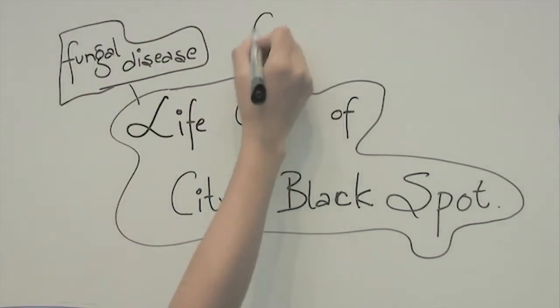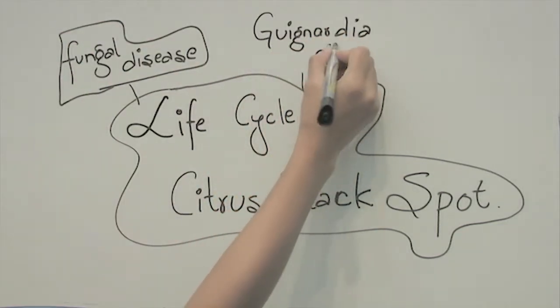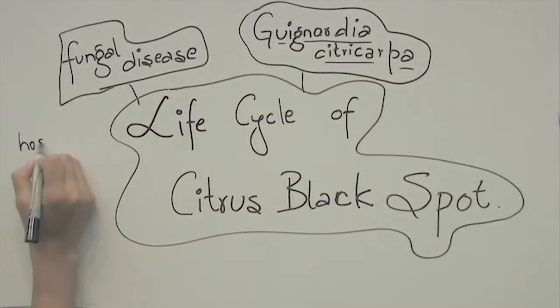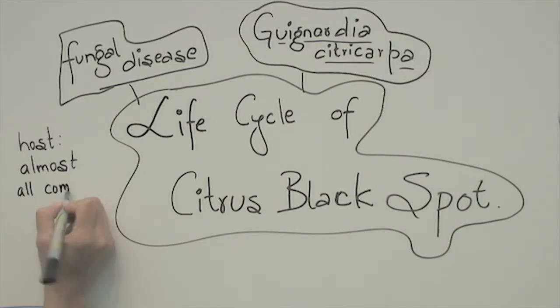Citrus Black Spot is a fungal disease caused by Guignardia citricarpa, an Ascomycete. Almost all commercial citrus cultivars are susceptible to this disease.